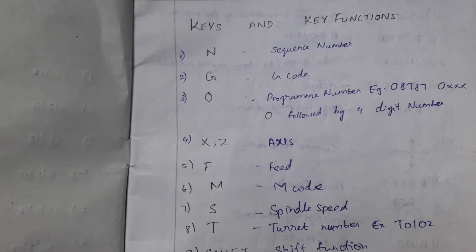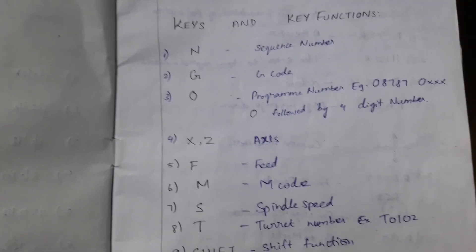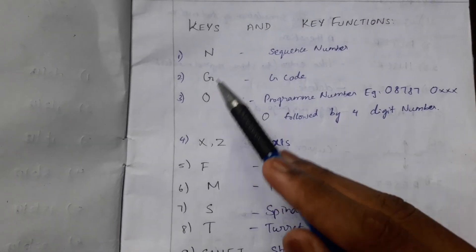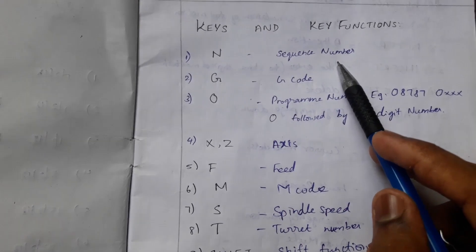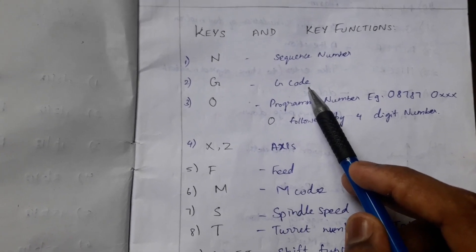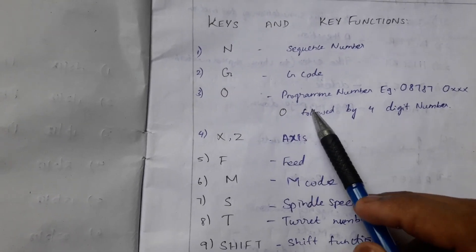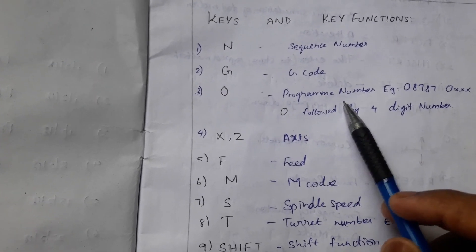The button N refers to the sequence number and G for the G code. So what is G code? G is the geometry code. O, O is the program number which must be started at the first step. Example: O8787. O must be followed by four digit numbers.